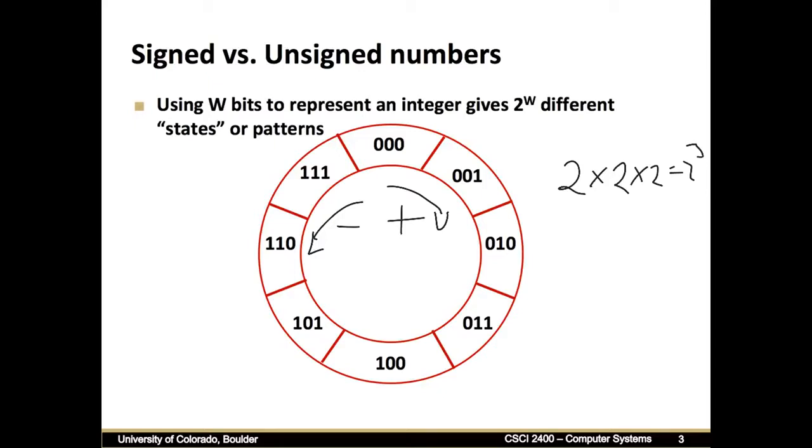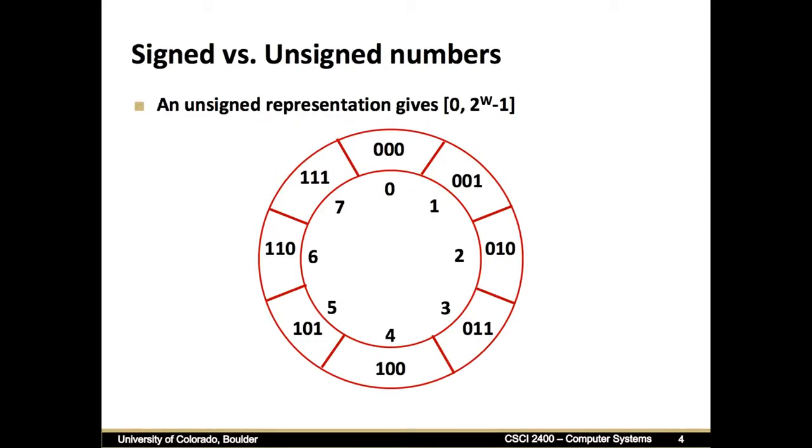Up to now, what we've been representing have been unsigned numbers. So in that particular case, we assigned the pattern of all zeros to be zero. And again, we add numbers in this direction. So we go from zero to one to two to three in our representation.